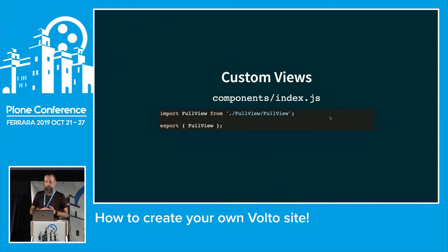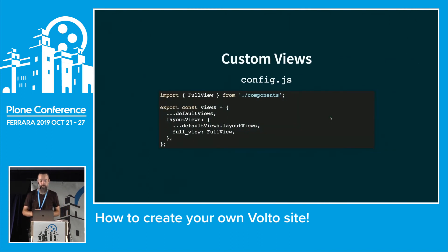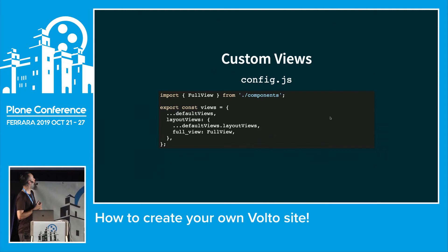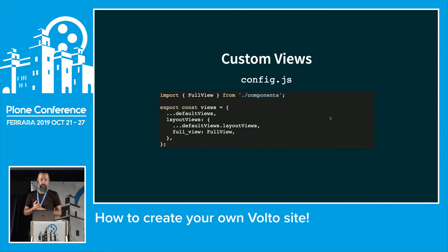To wire everything together, we have an index.js file in the components folder where we import our full view — similar to the __init__ file in Python. In config.js, we configure the views: we derive from the default views and add an extra one. We say that if the backend returns something called 'full_view', map it to our FullView component — that's the mapping from the REST API name to a React component.